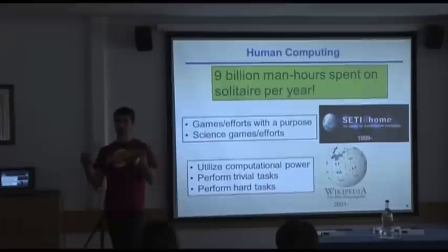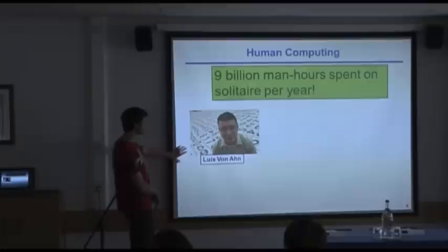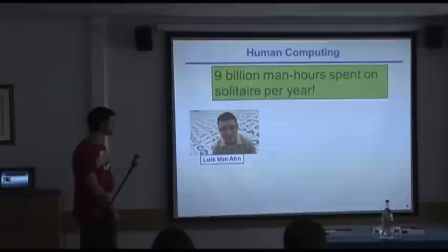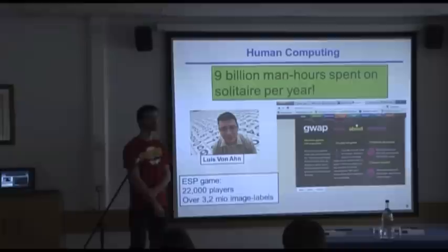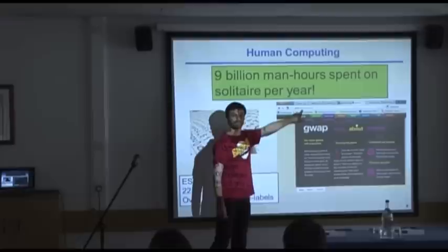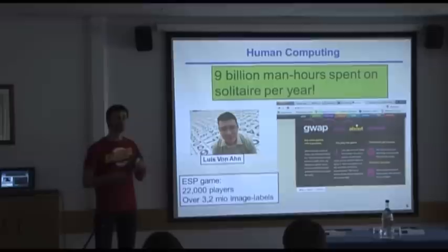When you mention human computing, I always go back to Luis von Ahn, because he's really one of the forefathers of the field. He invented CAPTCHAs — the distorted text you need to write. He has a site called GWAP.com, games with a purpose, where he has small games you can play that do something good.